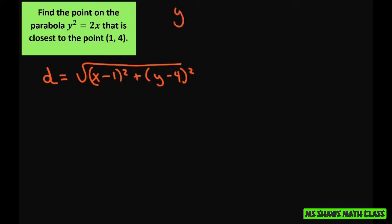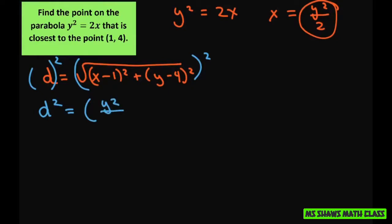Now we have y squared equals 2x. So I can say that x equals y squared divided by 2 and substitute that in. Because we're going to have to differentiate this. So I want to do that. I also want to, when I do that, square both of these. Get rid of this radical. So I'm going to have d squared equals. Now my x is now going to be y squared divided by 2 minus 1 squared plus y minus 4 squared.